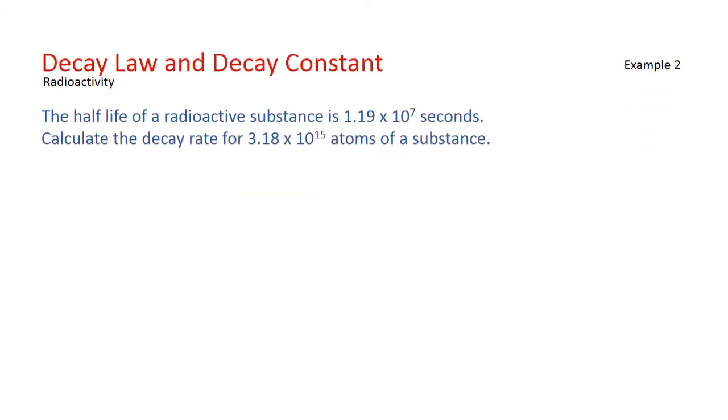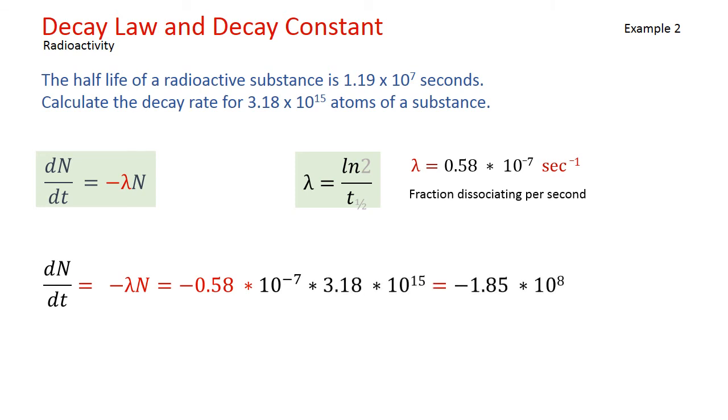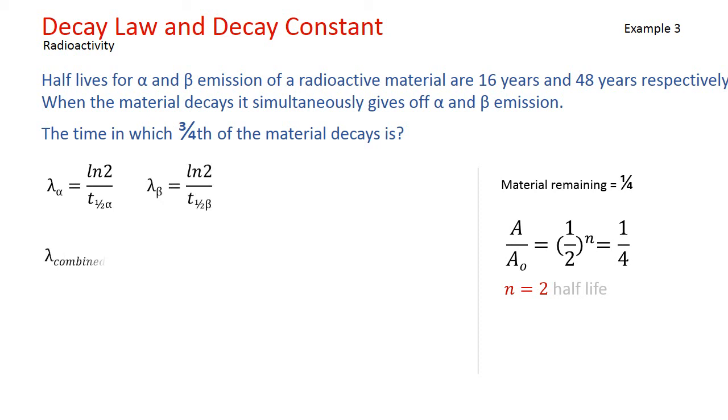Here is our second example. In this example, the material has two types of decay with two different rates. So we first find out the number of half-lives based on the material remaining after time t. This is an important concept. The combined lambda for the material can be taken as sum of alpha and beta.